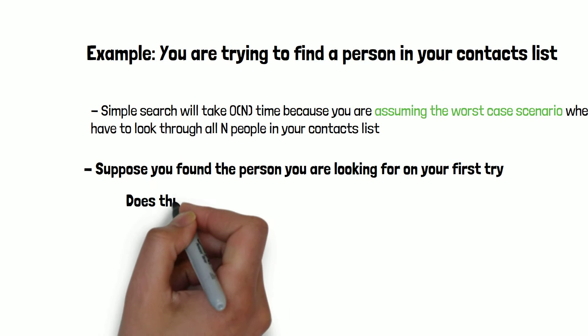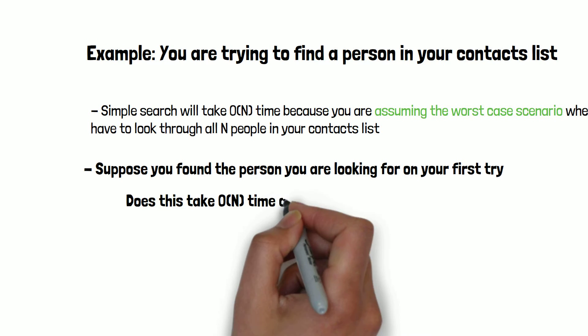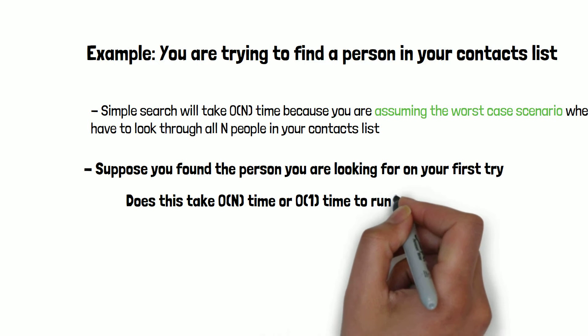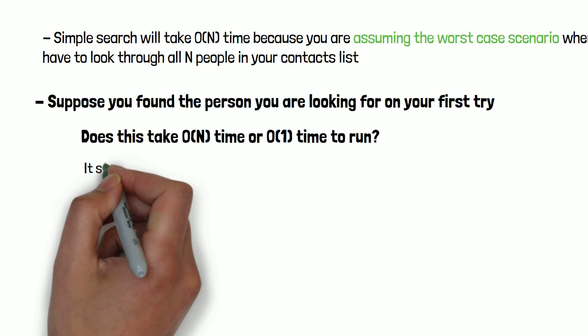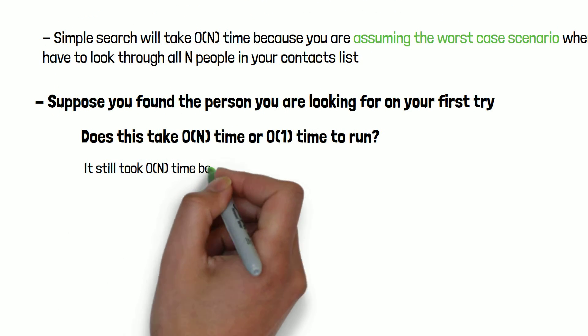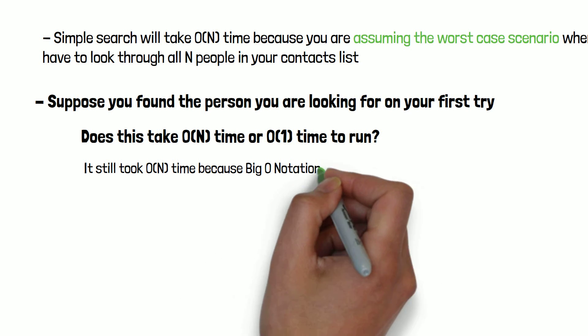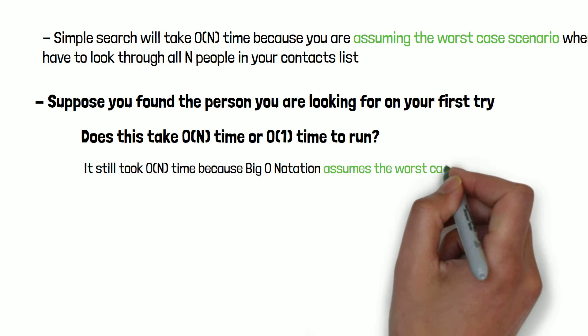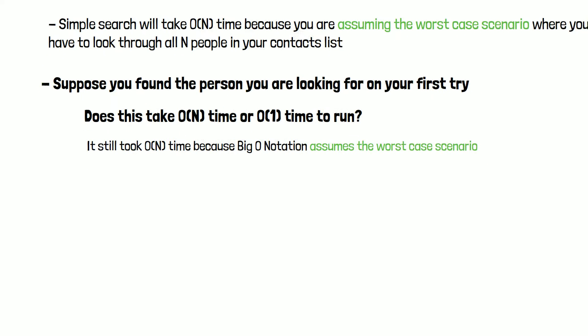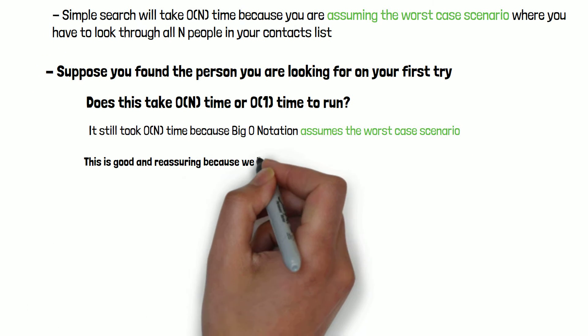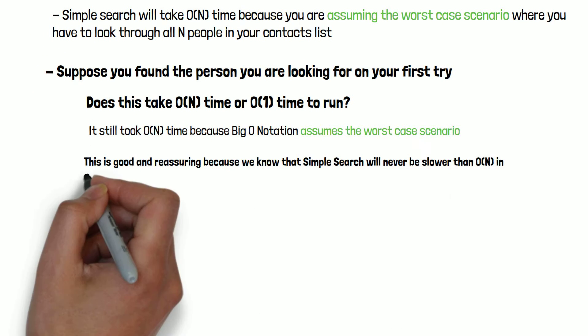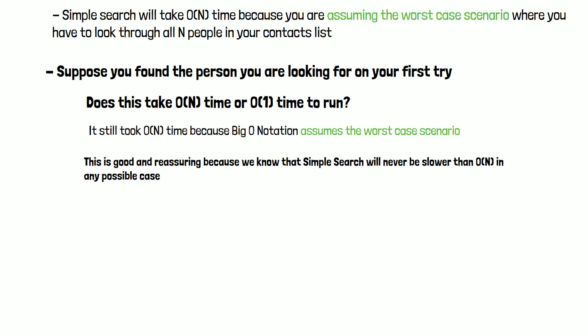So, you don't have to look at every entry since you found it on your first try. Well, then the question becomes, does this take O(n) time or O(1) time? The answer is, it still took O(n) time because the Big O notation is about the worst-case scenario.